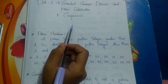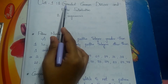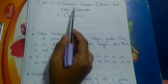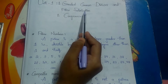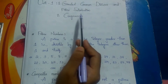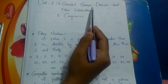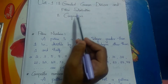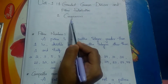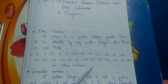Here is the new subject MSF. Let's see Unit 1. In Unit 1, we have topics like Greatest Common Divisors and Prime Factorization, and the second topic is Congruences. First let's discuss about Greatest Common Divisors and Prime Factorization, then we will go with Congruences.